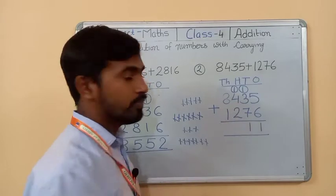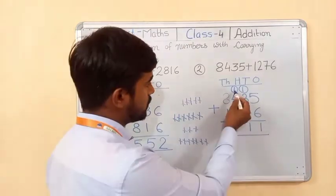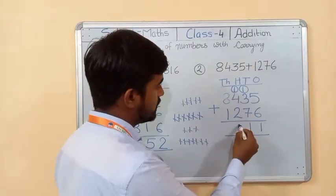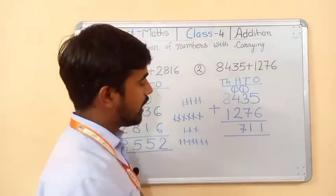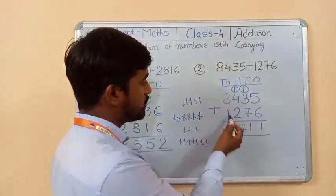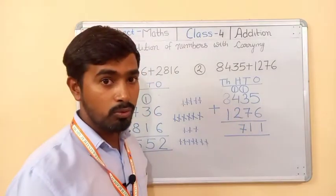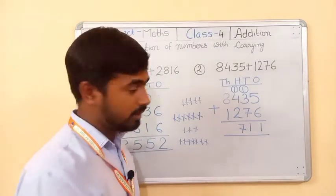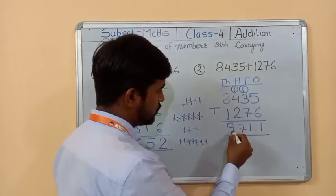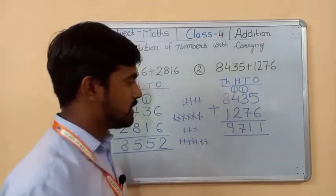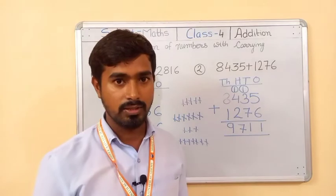Four plus two equals six. Six plus one carry equals seven. No carry generated. Now eight plus one: counting after eight gives nine. So the answer is nine thousand seven hundred and eleven.